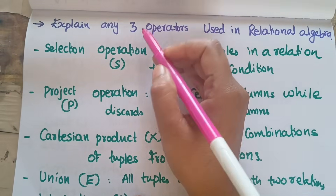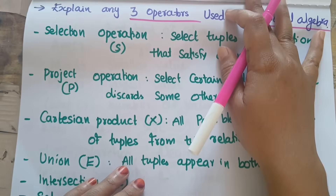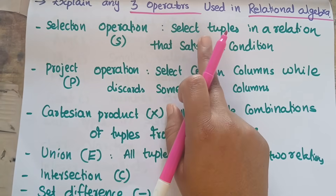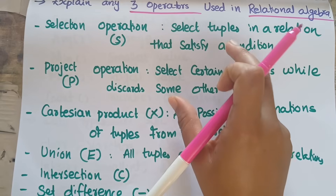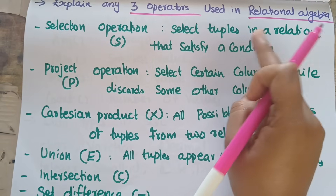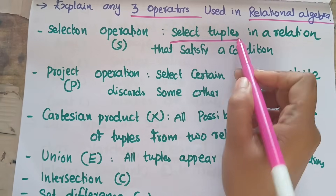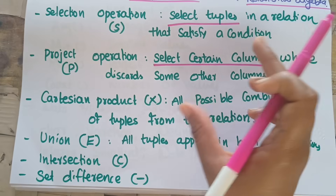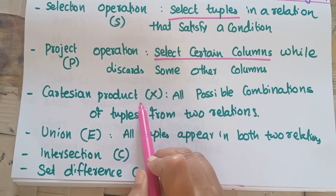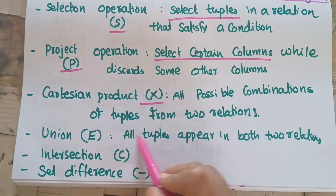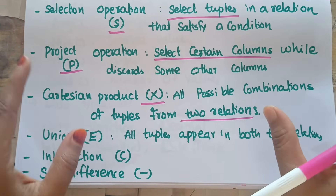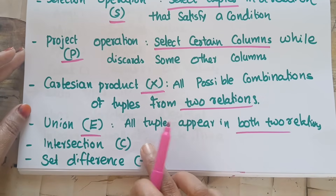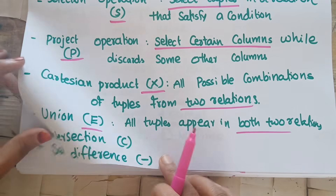Explain any three operators used in relational algebra. There are six operators total. The Selection operator selects tuples in a relation that satisfy a given condition — it works on rows. The Projection operation selects certain columns while discarding others. The Cartesian product gives all combinations of tuples from two relations. Other operators include union, intersection, and set difference.